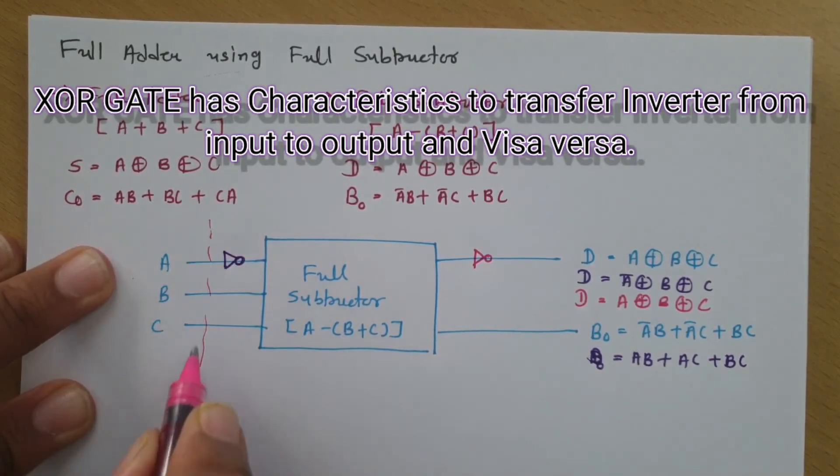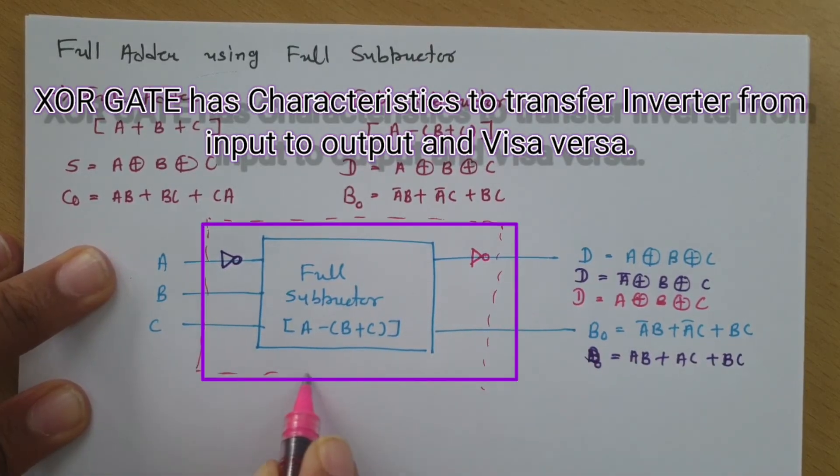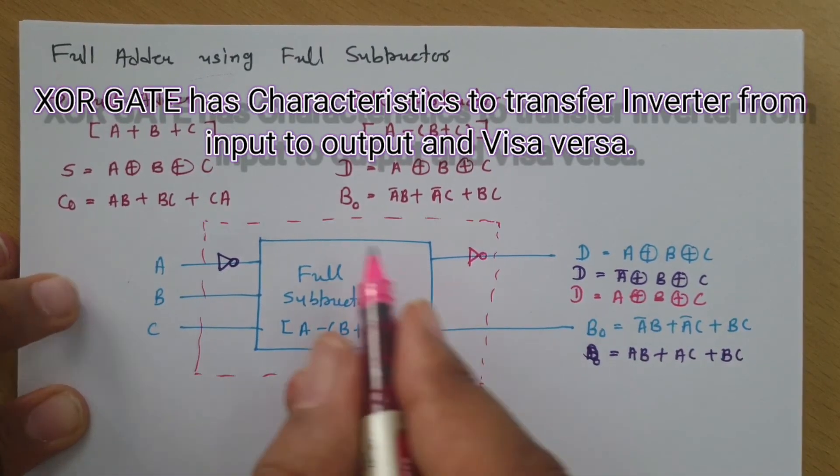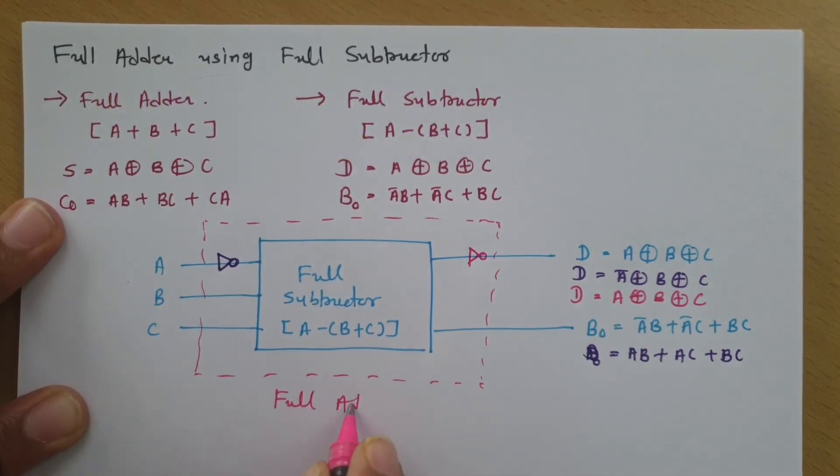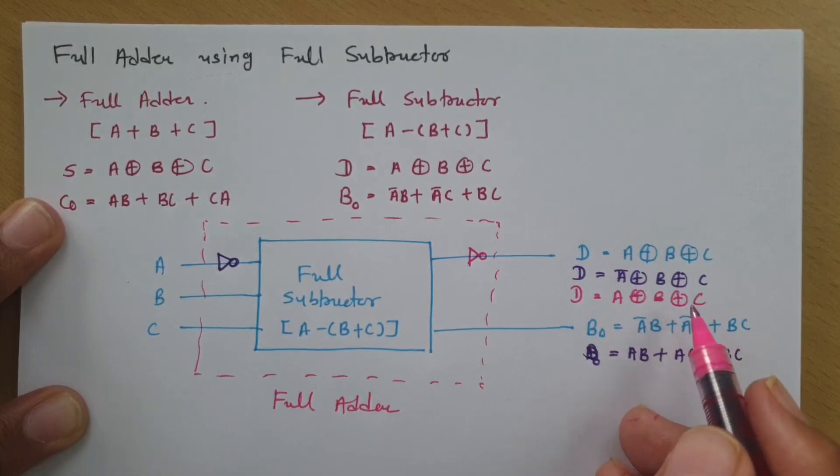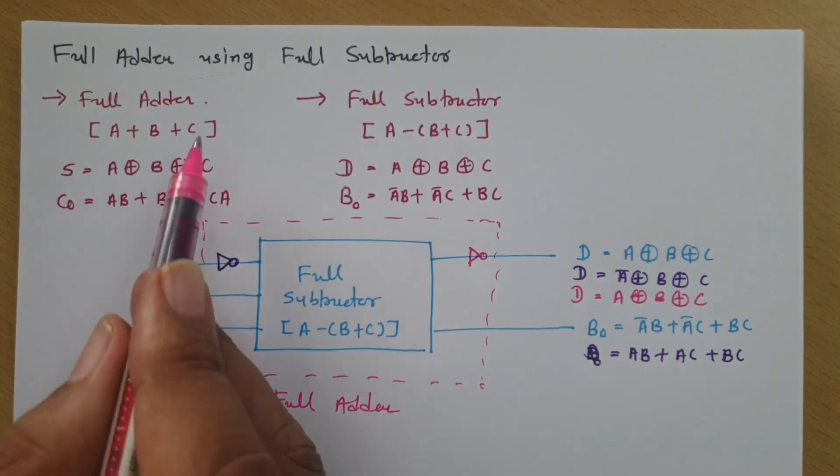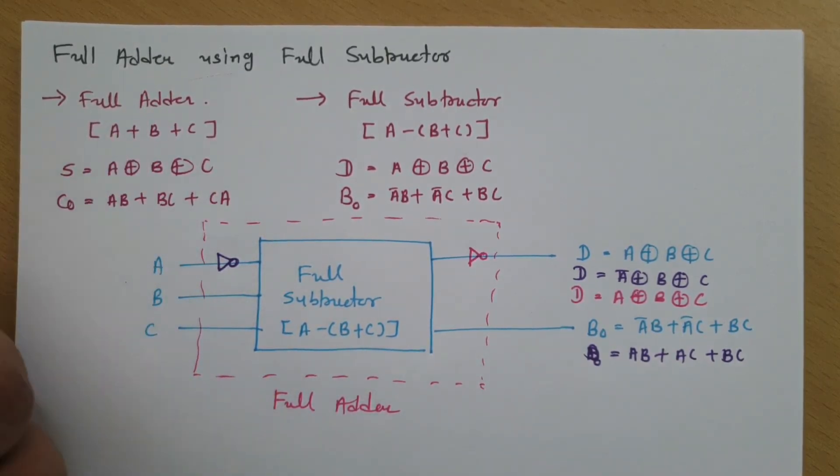So, you can observe this is what equivalent to full adder. Where this terminal that is A XOR B XOR C and this terminal that is AB plus AC plus BC. So, that is what the operation which is there with full adder.